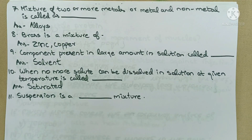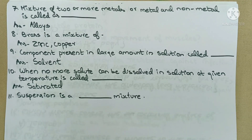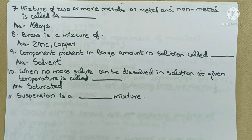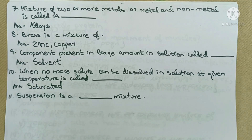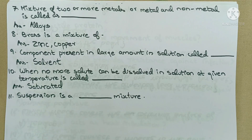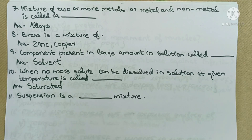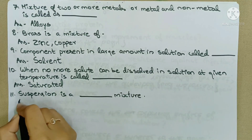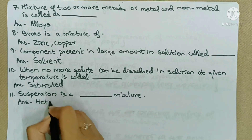Next question: Suspension is a what type of mixture? There are two types of mixtures: homogeneous and heterogeneous. When mud or sand particles are mixed in water and left undisturbed, the sand particles do not dissolve exactly in water — they are not properly dissolved. This makes it a heterogeneous mixture. So suspension is a heterogeneous mixture.